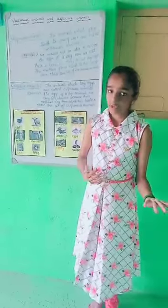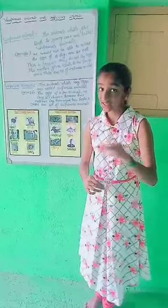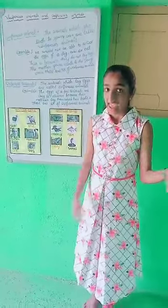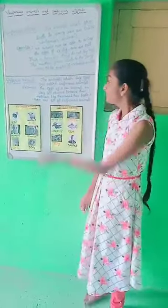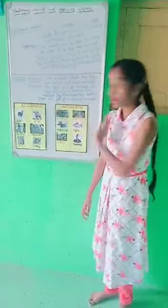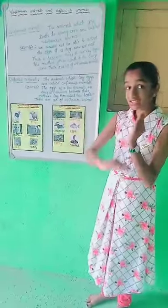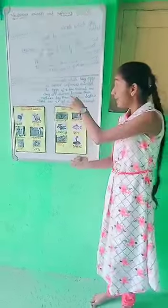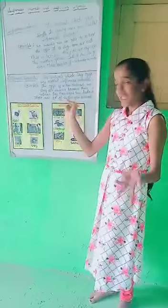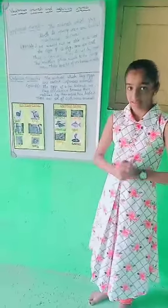Now, oviparous animals. The animals which lay eggs are called oviparous animals. The eggs of few animals are easy to observe because their mothers lay them outside their bodies. These are the examples of oviparous animals.